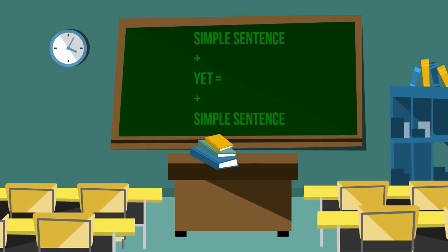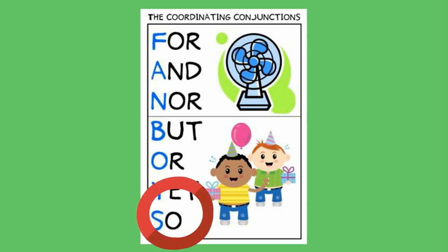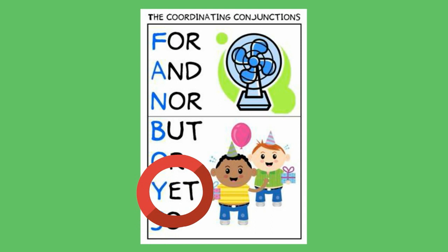Let's join these two simple sentences together with the coordinating conjunction 'yet.' Yet is one of the seven fanboys. Do you know them?